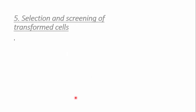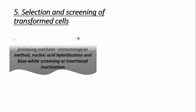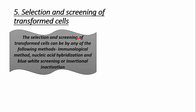The final step is selection and screening of transformed cells. We select and screen transformed cells by different methods, including immunological methods, nucleic acid hybridization, blue-white screening, or insertional inactivation. Transformed cells are selected by growing bacterial cultures on agar plates containing tetracycline or X-gal.